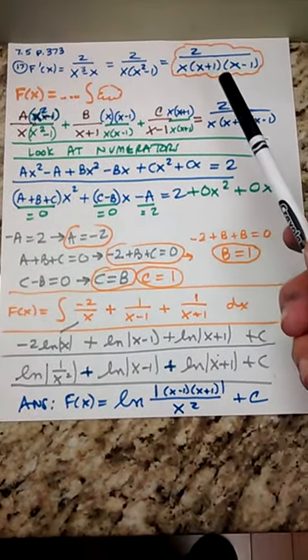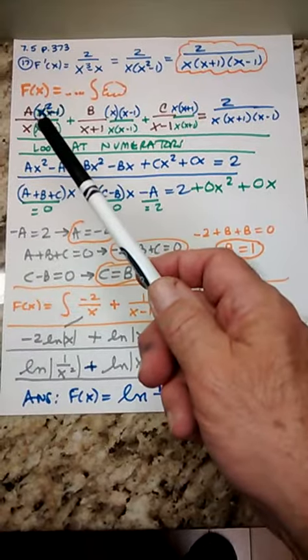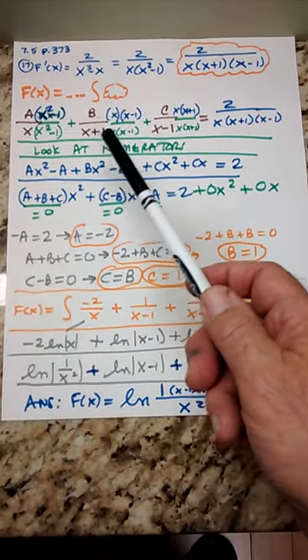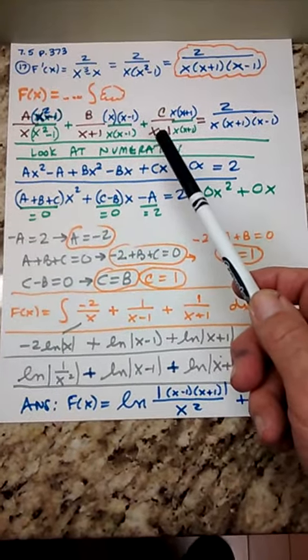After you factor the denominator, you end up with three fractions: a over x, b over x plus 1, c over x minus 1.